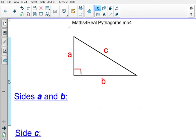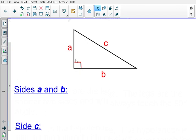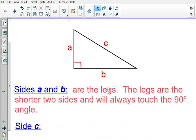Most often you're going to find a right triangle when you're dealing with Pythagorean Theorem labeled A, B, and C. Sides A and B are considered the legs, and the legs are the shorter two sides and they will always touch the 90 degree angle. They're the two sides that form the 90 degree angle. A and B are the legs.